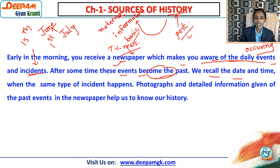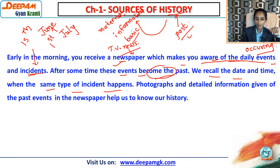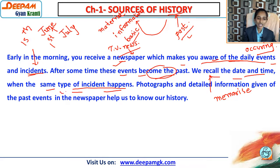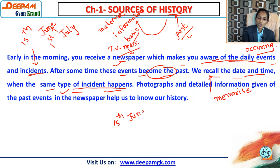We recall the date and time when the same type of incident happens again. It is very important to recall — it means to memorize, to remember — the date and time when the same type of incident happened. When we remember things or events which had happened in the past, and the same type of incident happens again, we recall it. For example, take 15th June — suppose somebody's birthday is on that day.